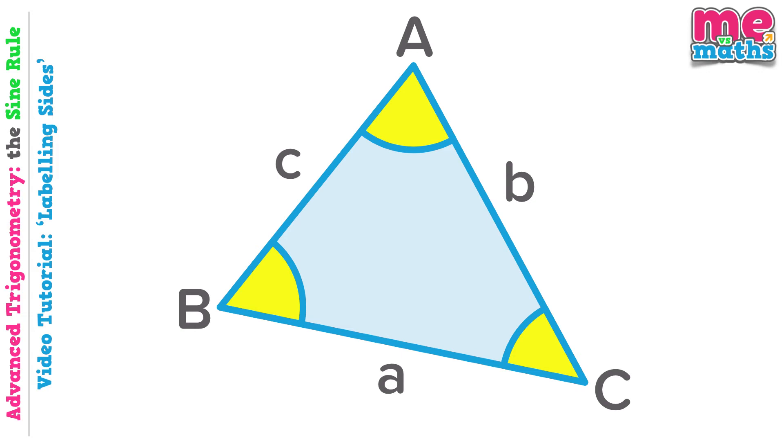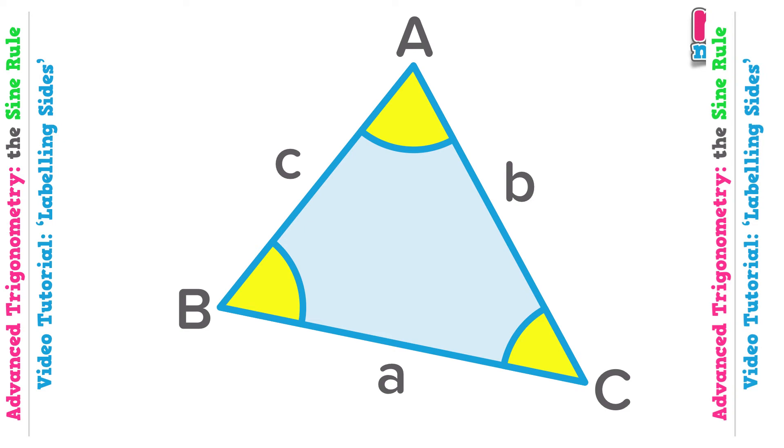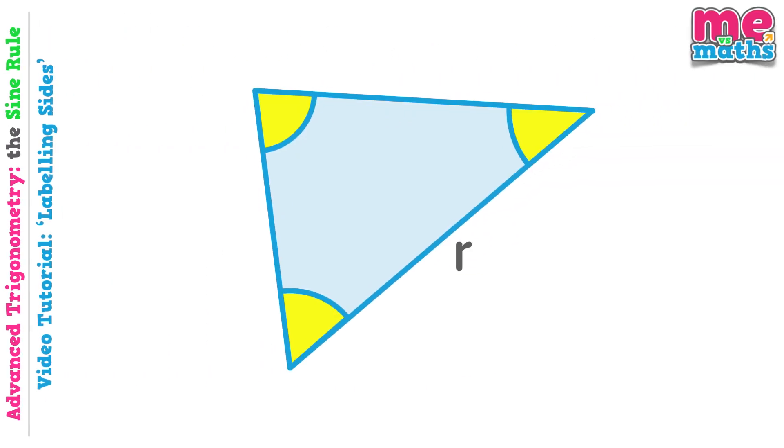Let's look at another triangle now and label it up again. Here we're starting from a very different point. We've just been given one side which is called R. Well opposite side R, we must have angle R. Don't forget the capital letter.